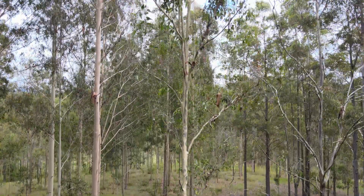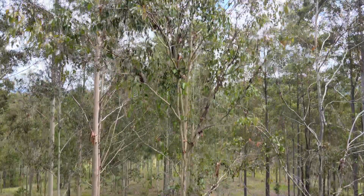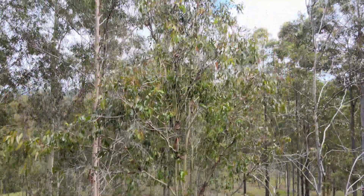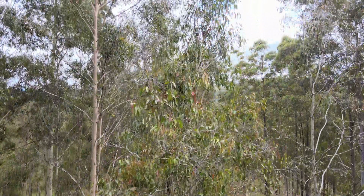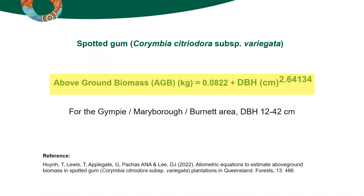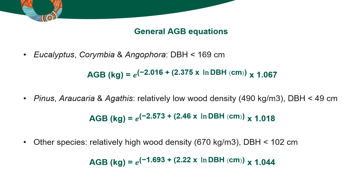For most tree species, the AGB is related to the DBH, so foresters have developed various equations to estimate these values. This example of an equation for AGB gives the dry weight of a spotted gum. There are many other equations that have been developed for various species in various locations, and these equations are more general in nature.